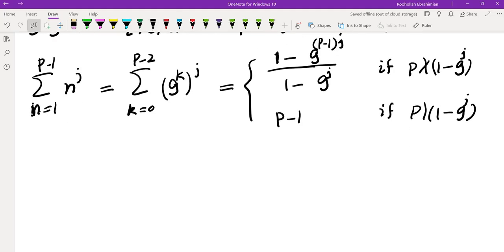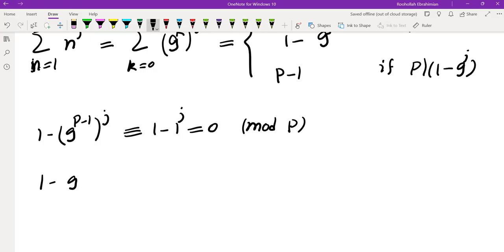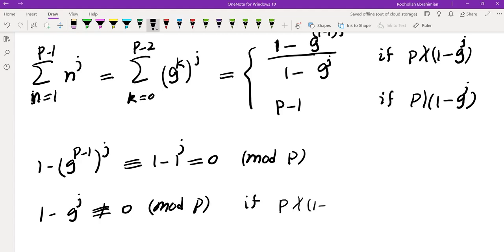Now if we look at the first case, 1 - G^((P-1)j) mod P, we get 1 - 1^j, which is 0 mod P. And of course, 1 - G^j isn't 0 mod P if we have the first condition, if P doesn't divide 1 - G^j. In fact, it's basically the same thing that we have here.